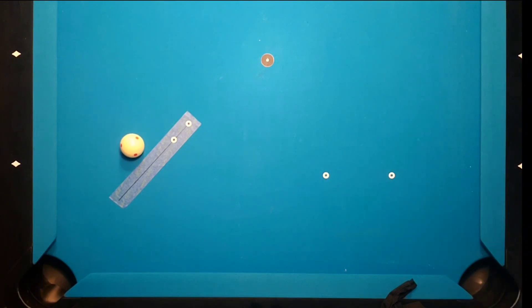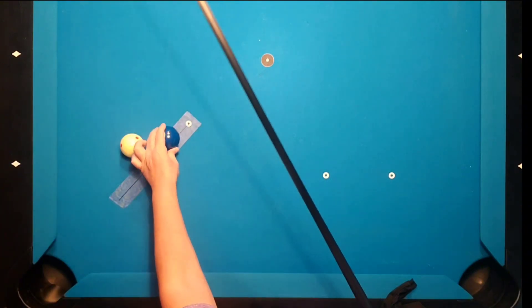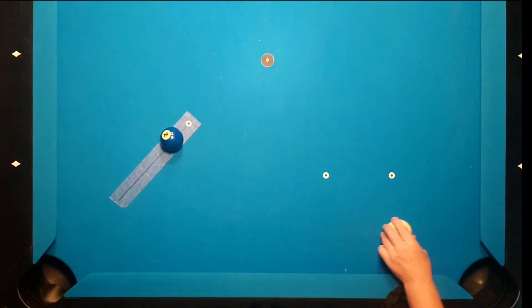Repeat the drill several times to ensure that your aiming aid is set up accurately. If you are a brand new player, it may be beneficial to have a more advanced player test the accuracy of the aiming aid. Inconsistencies in your stroke could cause you to miss the shot even if everything is set up correctly.